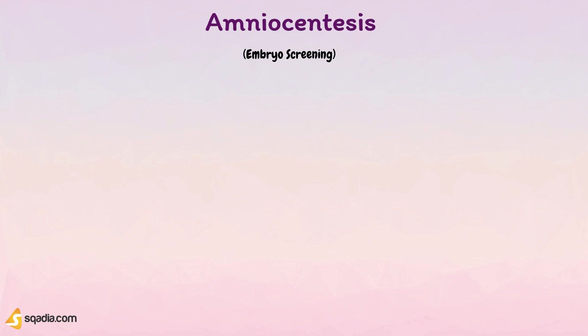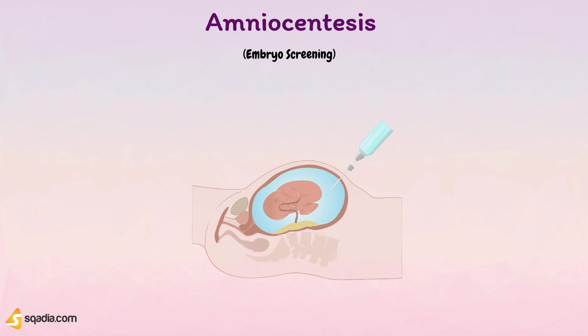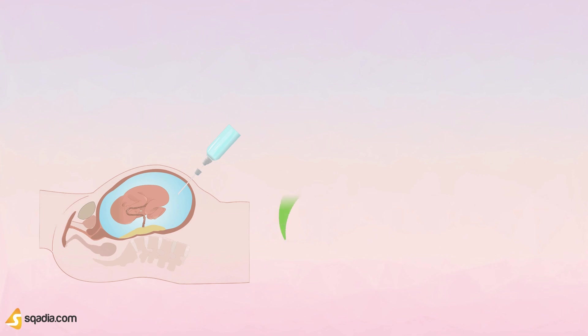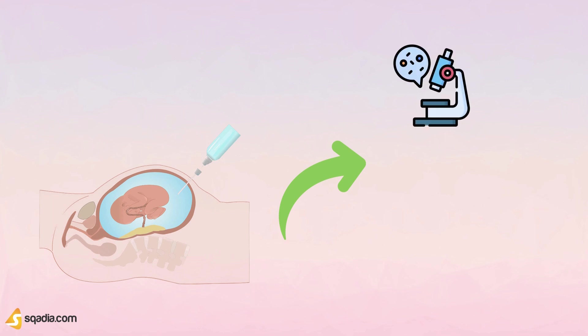One of these techniques is amniocentesis. Before the start of the procedure, a local anaesthetic can be given to the mother. A needle is usually inserted through the mother's abdominal wall, then through the wall of the uterus, and finally into the amniotic sac. With the aid of ultrasound guidance, a physician punctures the sac in an area away from the foetus and extracts approximately 20 millilitres of amniotic fluid. After the amniotic fluid is extracted, the foetal cells are separated from the sample. The cells are grown in a culture medium, then fixed and stained. Under a microscope, the chromosomes are examined for abnormalities — for example, Down syndrome.